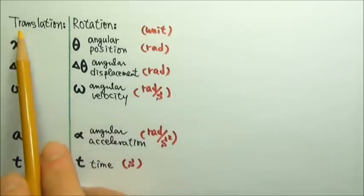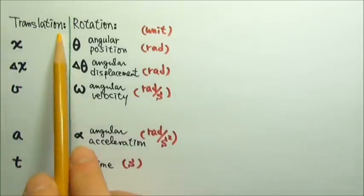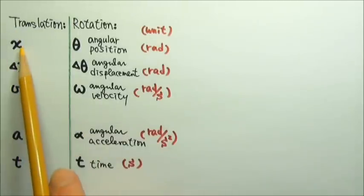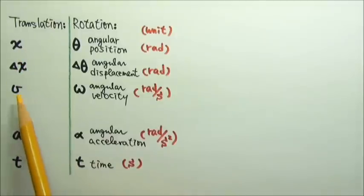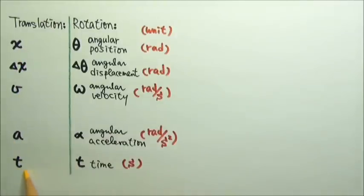To describe translational motion, we use position, displacement, velocity, acceleration, and time.